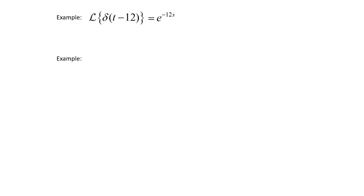For a second example, this time we want to find the Laplace transform of the Dirac delta function of t minus 3, plus 5. We'll take the Laplace transform of each of these terms. For the Dirac delta function of t minus 3, our t naught is equal to 3, so we'll get e to the negative 3s. And then the Laplace transform of 5 will be 5 over s.